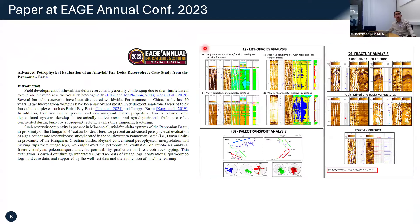And also in 2023, last year, one of the papers is also related to fractures — naturally fractured reservoir characterization — integrating from image log interpretation to rock typing and reservoir modeling, based on seismic attributes, also in AAPG. Feel free to find information from these publications.